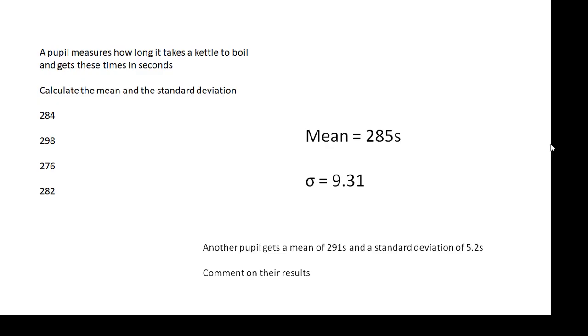Another pupil gets a mean of 291 and a standard deviation of 5.2. Comment on their results. Which pupil do you reckon did the experiment better more accurately? I reckon it was the second one. Because they have a smaller standard deviation. Their results are all closer together.